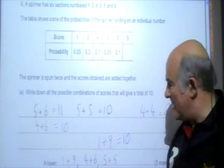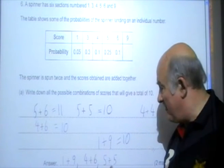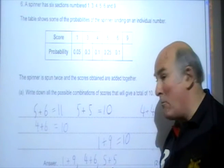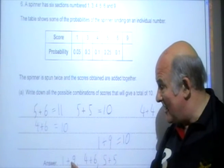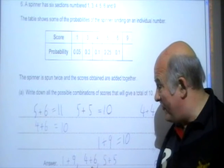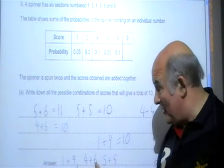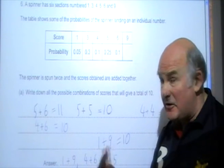And settles on 1 plus 9, 4 plus 6, 5 plus 5. But sadly, forgets to have the 9 plus 1 and 6 plus 4 alternatives, these two the other way around.